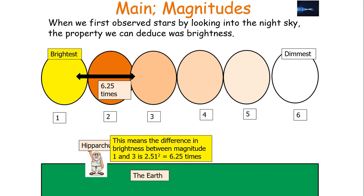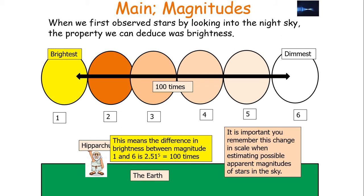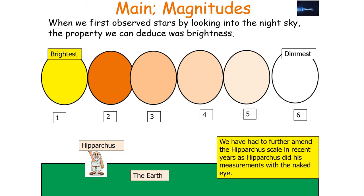Between magnitude 1 and 3 the ratio is 2.51² which is 6.25 times as bright. Between 1 and 4 it is 2.51³, which is 16 times as bright. Between 1 and 5 it is 2.51⁴, which is 40 times. And between 1 and 6 it is 2.51⁵, approximately 100 times. It is important to remember this change in scale when estimating possible apparent magnitudes of stars in the sky.